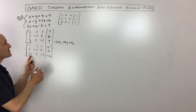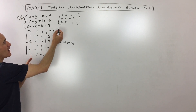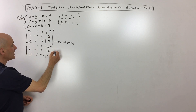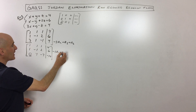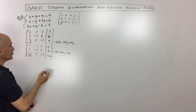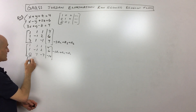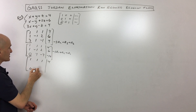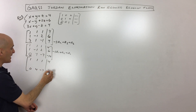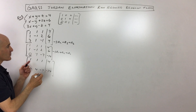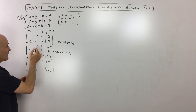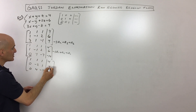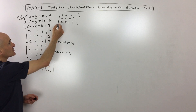This first example, we've already got 0 here. Now we want to get 0 here in this position. The way I'm going to do that is multiply negative 1 times row 1, add it to row 2, and put the answer in row 2. So this top row is going to stay the same, the bottom row is going to stay the same. Negative 1 plus 1 gives us 0; negative 1 plus negative 1 is negative 2; negative 1 plus 2 is 1; negative 4 plus 6 is 2. So now you can see we've got zeros here and here.